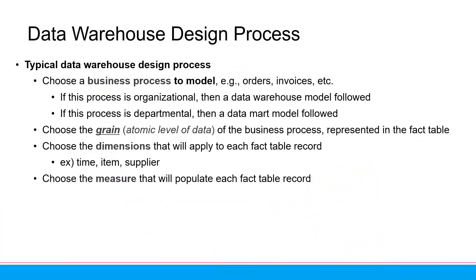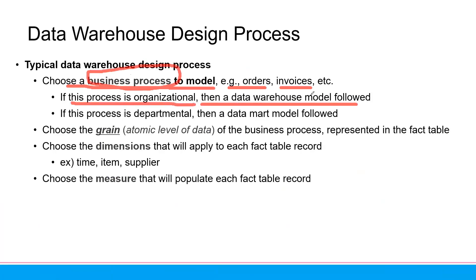There are some typical data warehouse design process steps. First, we can choose a business process model. For example, in previous examples I gave you orders or sales. If you want to know about invoices, you need to know the business process to generate the invoice. If this process is organizational, then a full data warehouse model is used. If this process is departmental — only one department — then we use the data mart model.